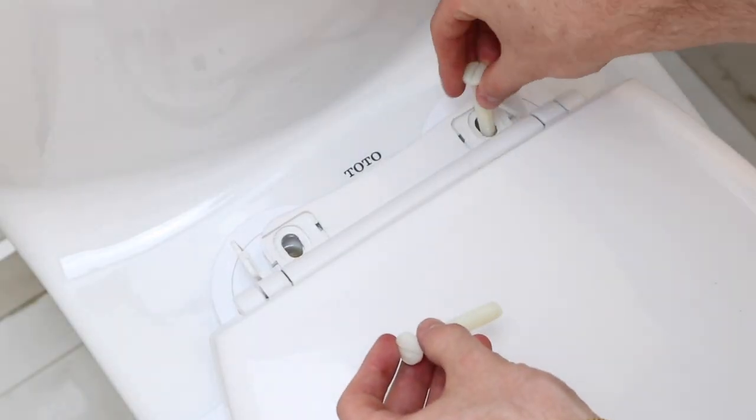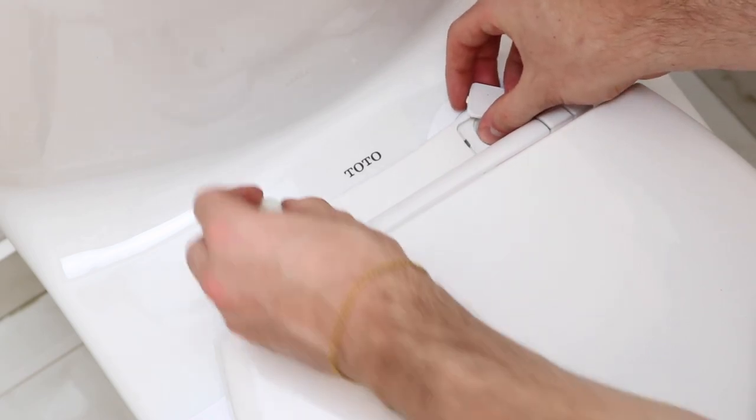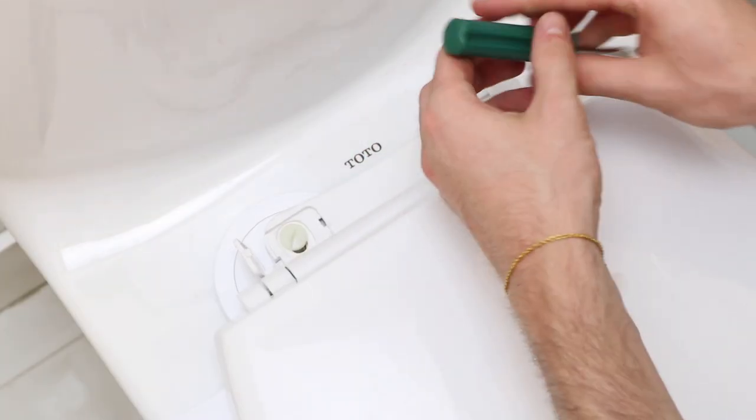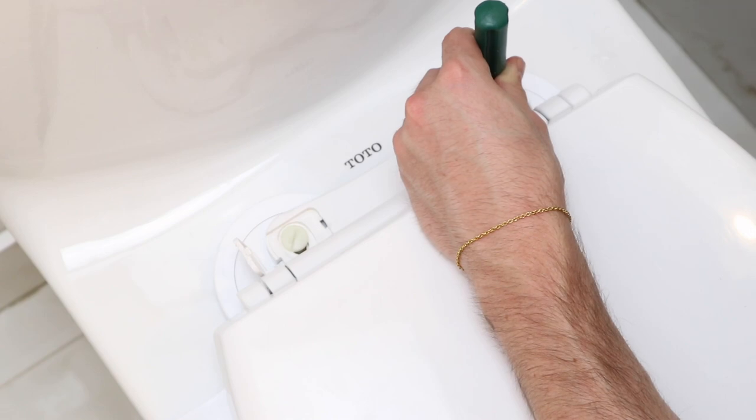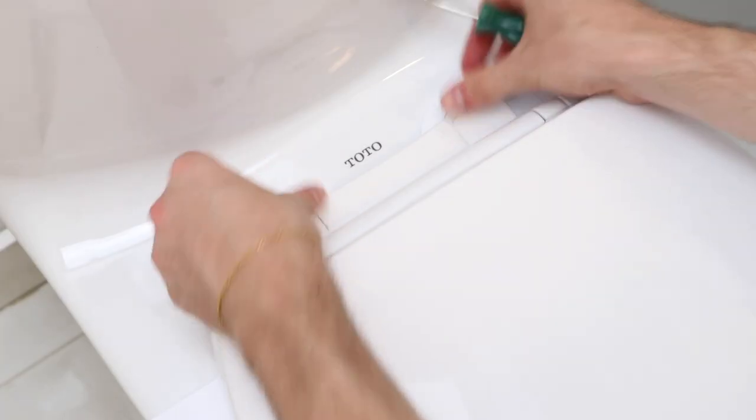Now reattach your toilet seat to your toilet. Make sure to not tighten too hard as you still need to make a few adjustments to make sure your toilet seat is fully lined up with the brode.